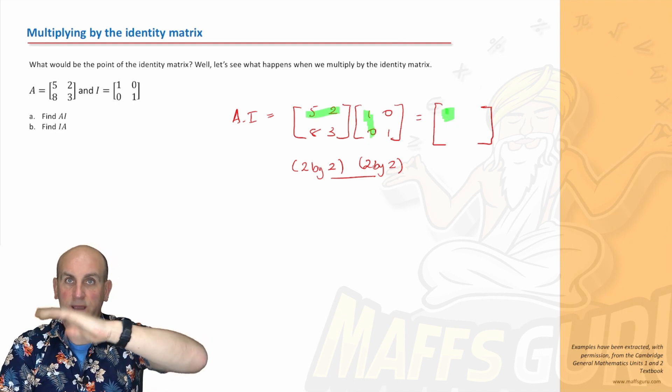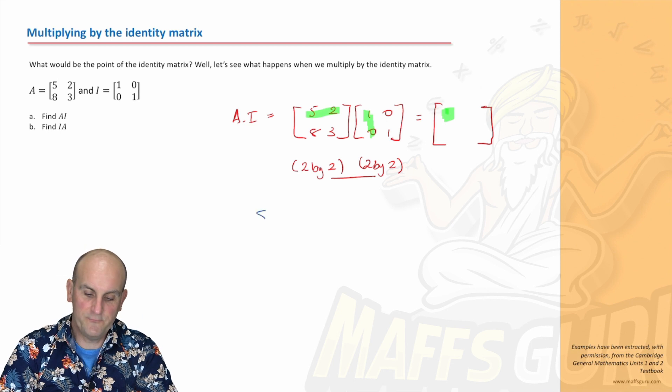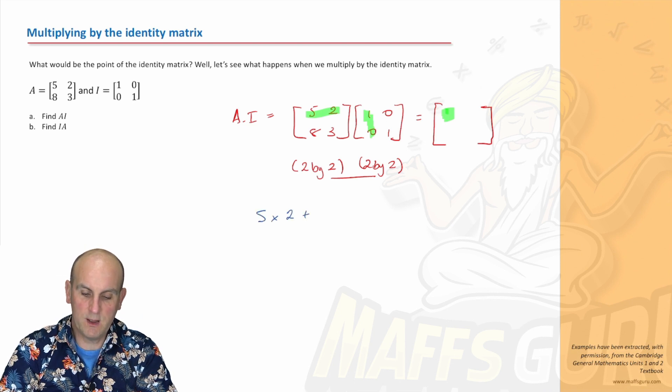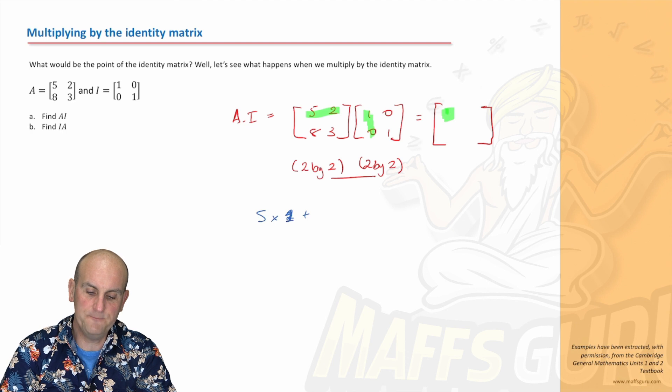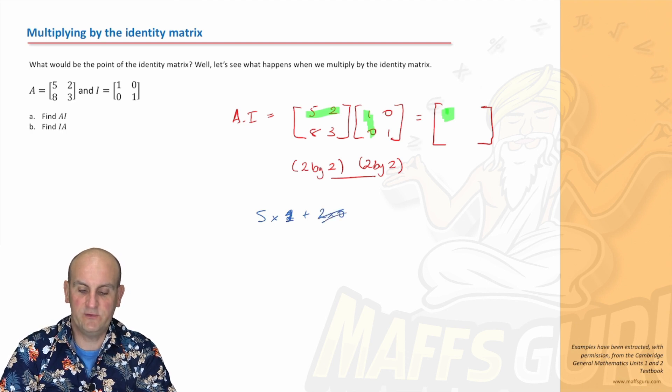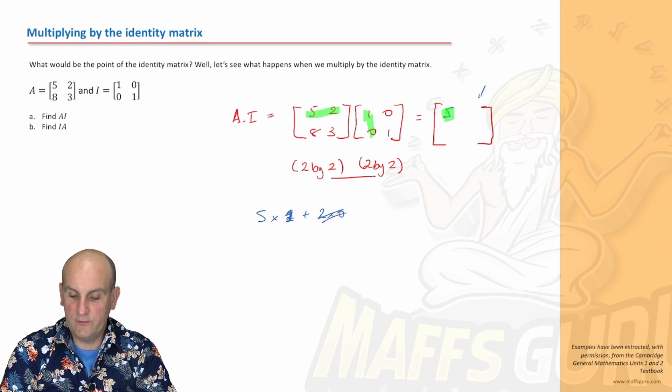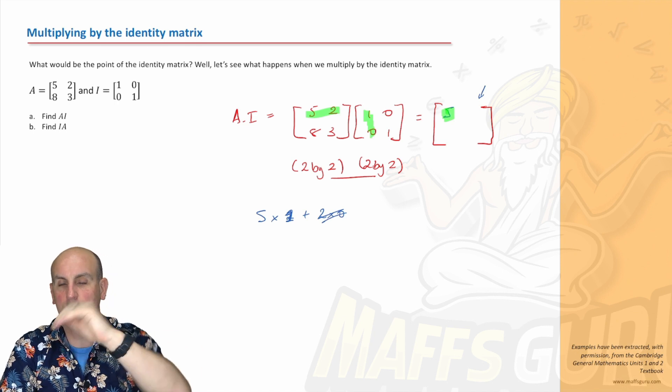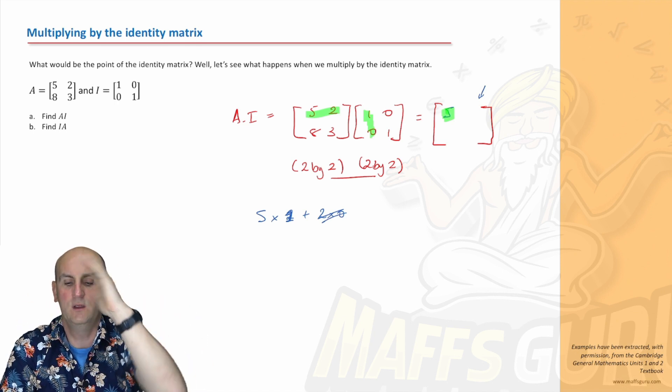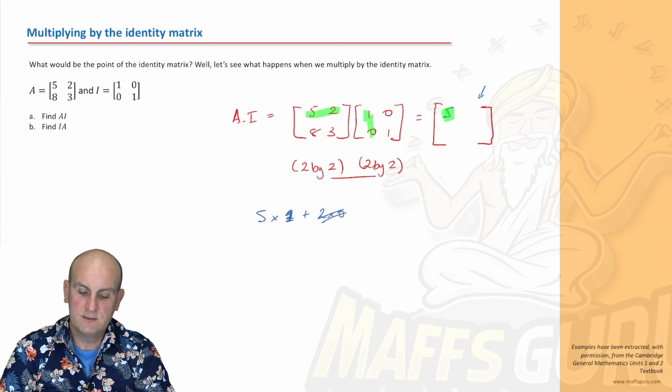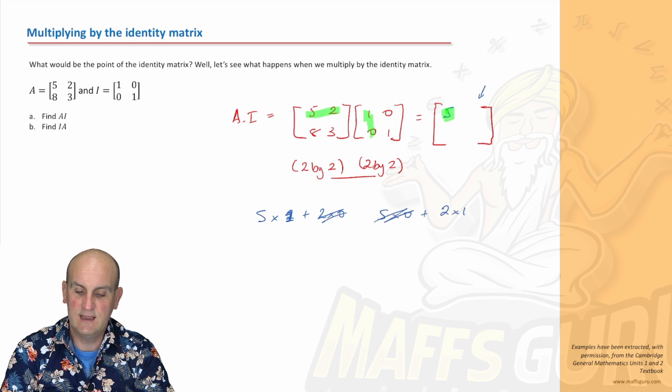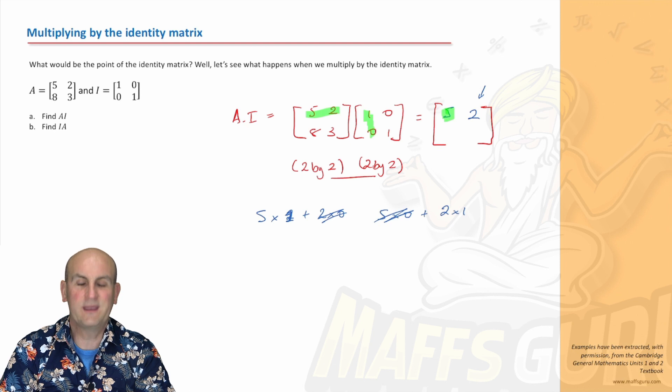If you remember, we do the multiply and add. So we're going to do five times one plus two times zero. Well, two times zero is zero, five times one is five. Ka-ching, we have a five there. Now let's do this corner here, which is row one, column two. So we're going to row one, which is the five and the two, times by zero, one. So there we're going to have five times zero plus two times one. Well, that disappears and that gives me a two. Hold on a moment.